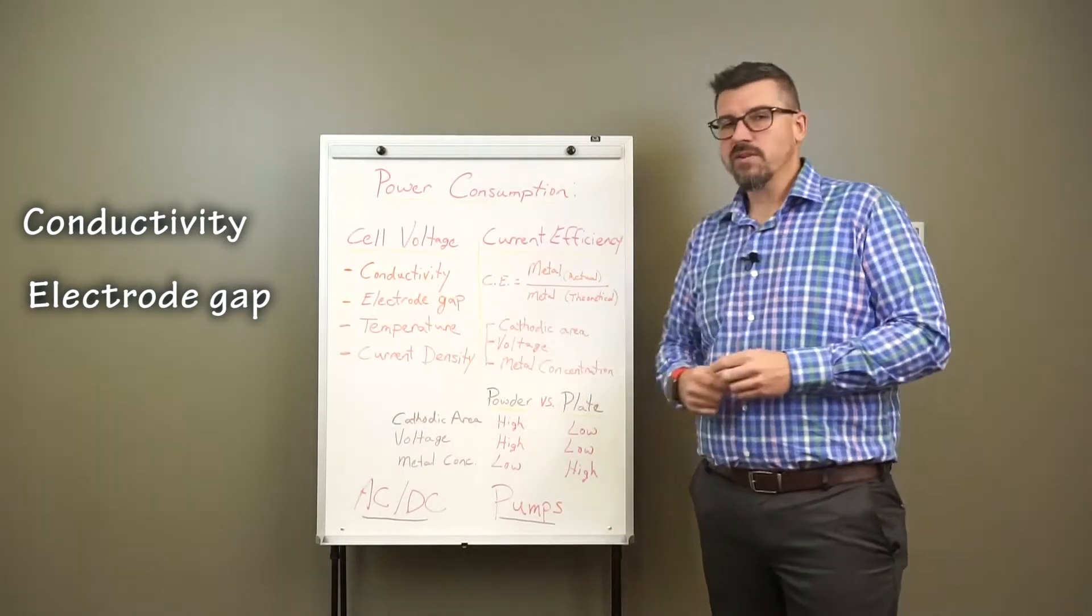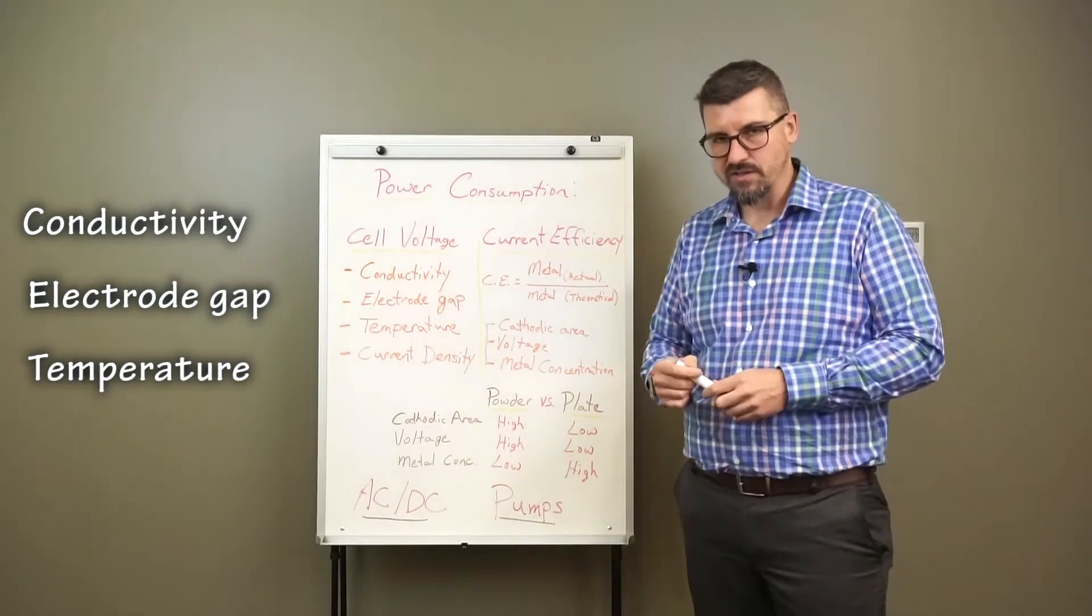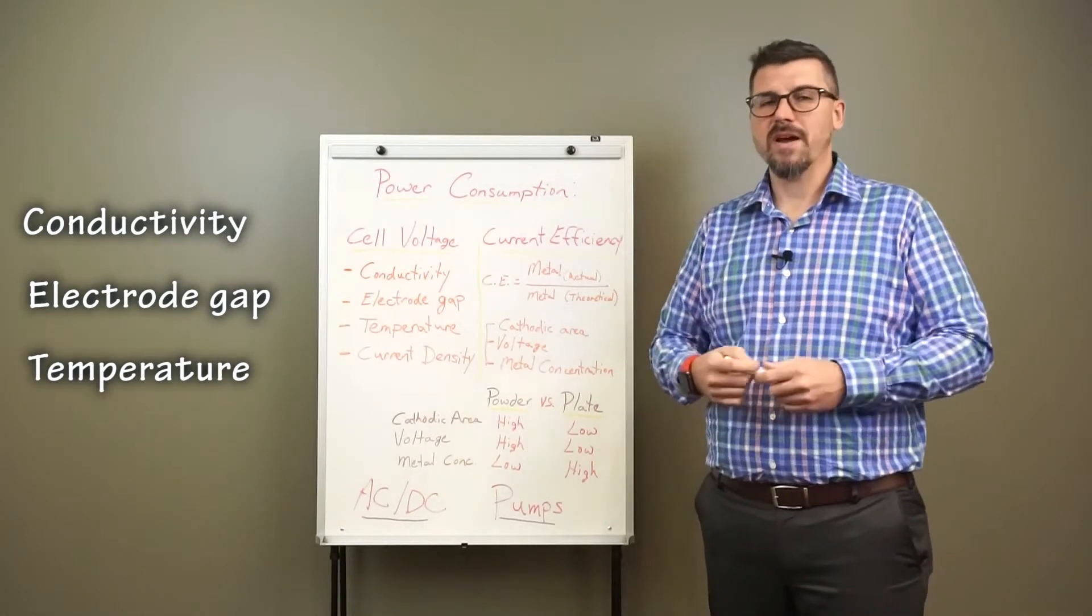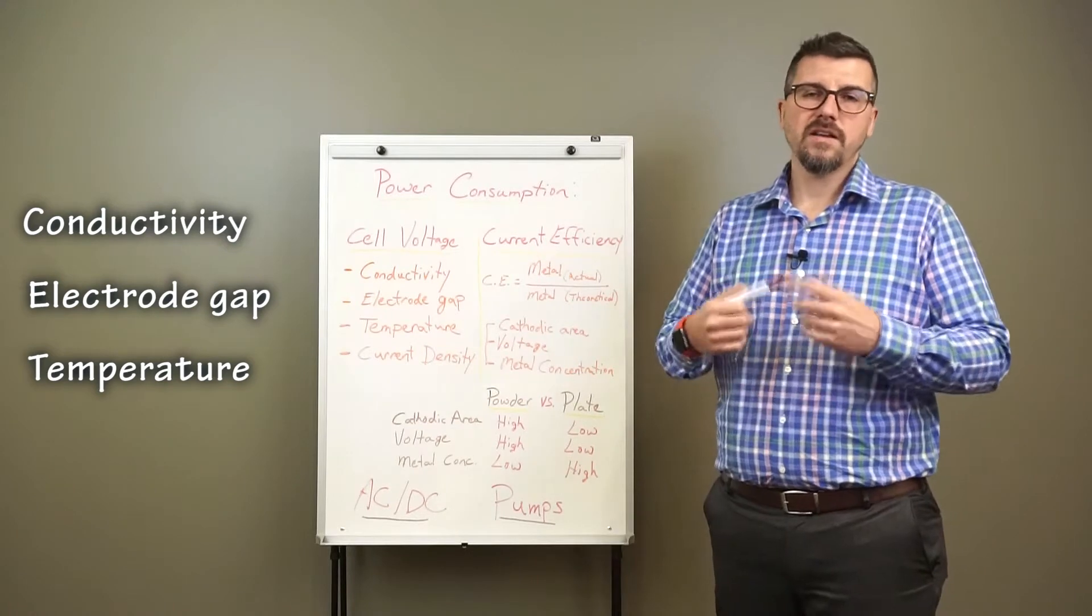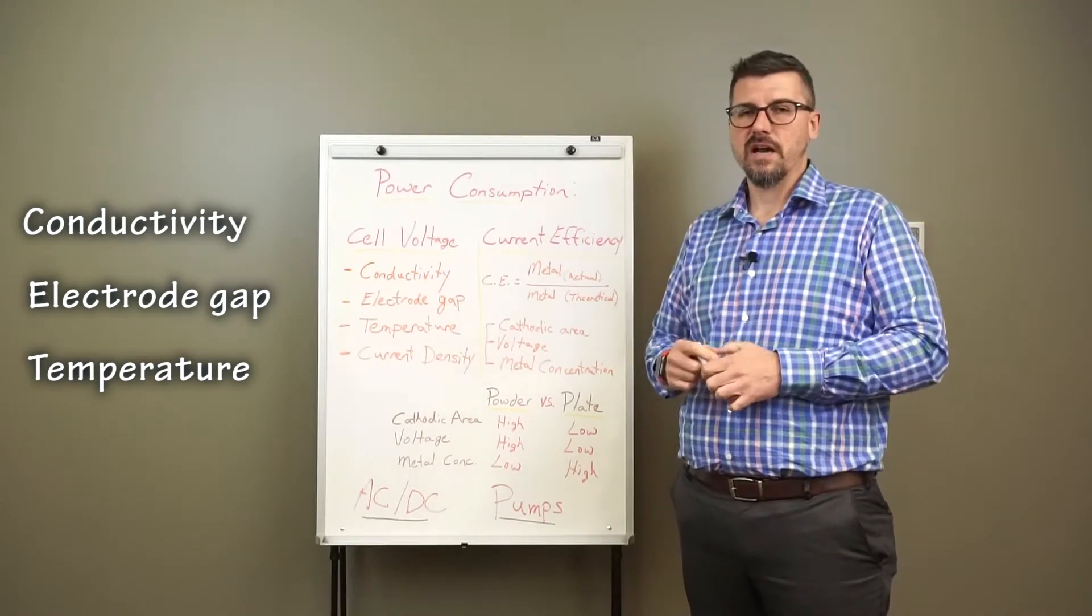The third variable is the temperature. The temperature actually helps to reduce the cell voltage and reduce the power consumption. So often, what we'll recommend is to heat the solution, heat the electrolyte, so that we can decrease the power consumption.